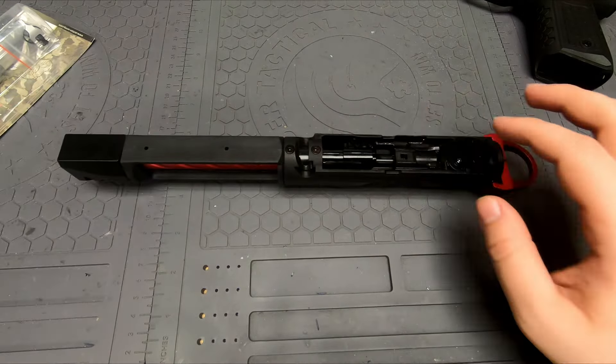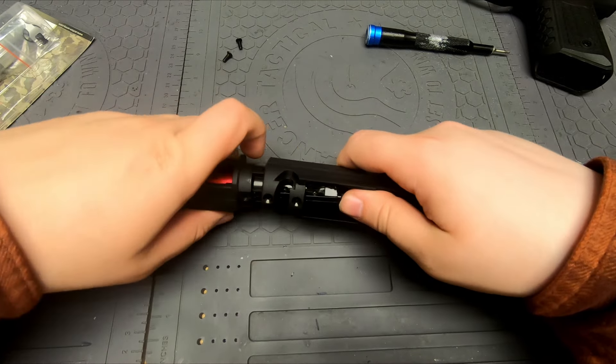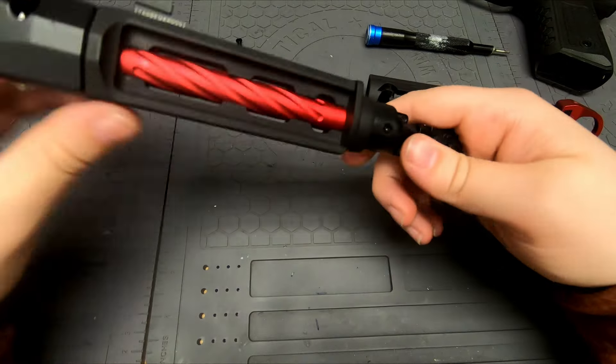Right, so those two screws are removed now so we can remove the entire barrel here. The Lancer Tactical is a little bit tight, so I like to pull the bolt back and kind of grab onto it from the inside a little bit, but it does come out eventually. There it goes.